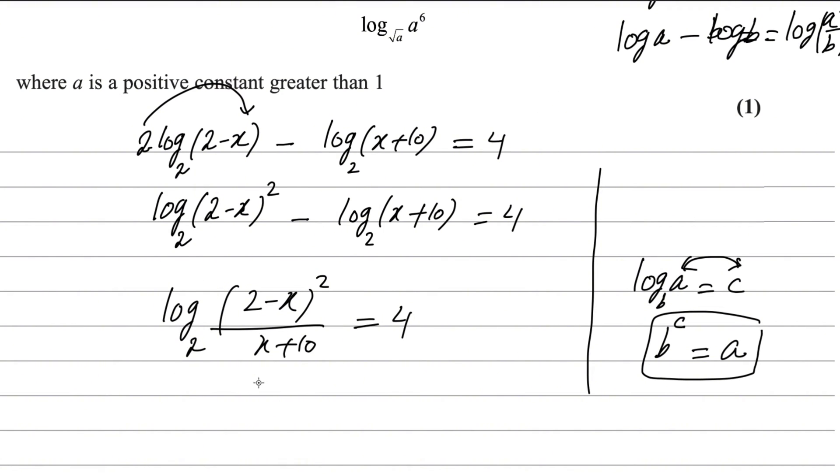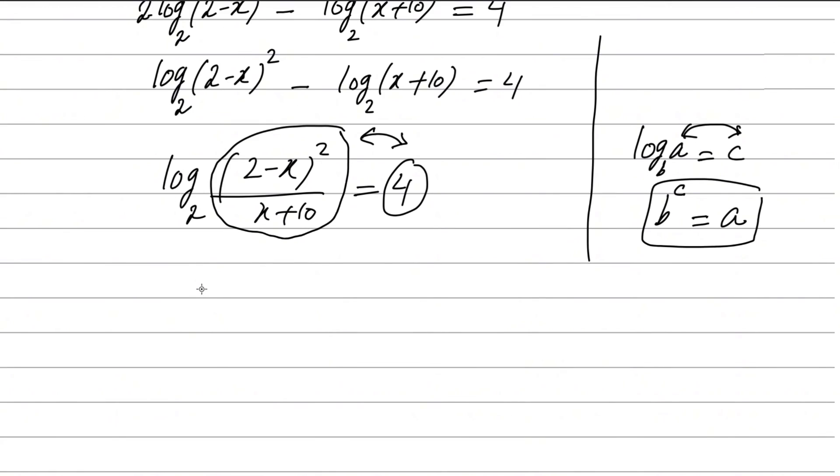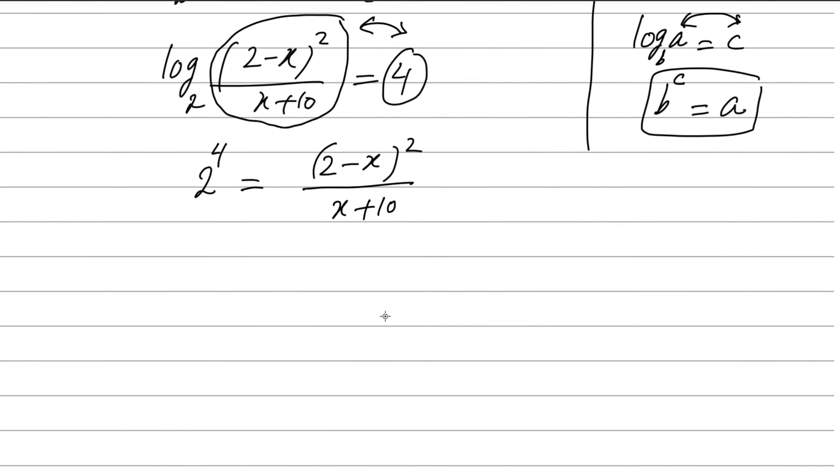We will interchange these two. 4 becomes the power of the base. So we can write as 2⁴ = (2-x)²/(x+10). Now you do cross multiply. 2⁴ is 16.